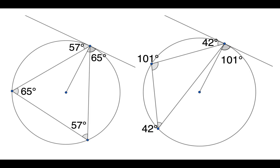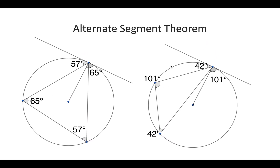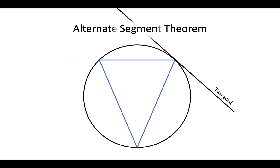Now we have the alternate segment theorem. This says that if you've got a tangent and a triangle inside the circle coming off that tangent, the angle from here is the same as the angle on the opposite corner of the triangle. We've got 42 degrees here and 42 degrees over here, and 101 degrees here and 101 degrees here. This is called the alternate segment theorem — these two green angles will be the same and these two red angles will be the same.